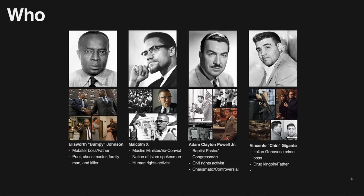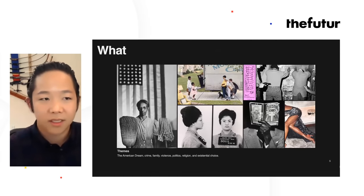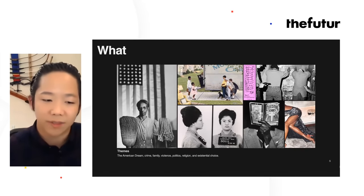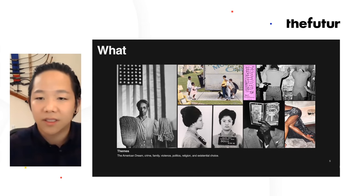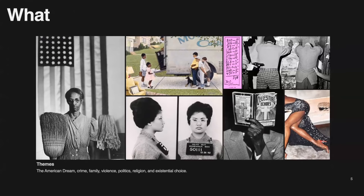The third character is Adam Clayton Powell Jr., who was a congressman, and the fourth is Vicente de Chin Gigante, an Italian mob boss. The show explores the relationships of these four characters — alliances, betrayals, how they move forward. Addressing the 'what,' this show is about the American dream, crime, family, violence, politics, religion, existential choice. Things aren't black and white; every time we make choices, sometimes we have to make compromises.